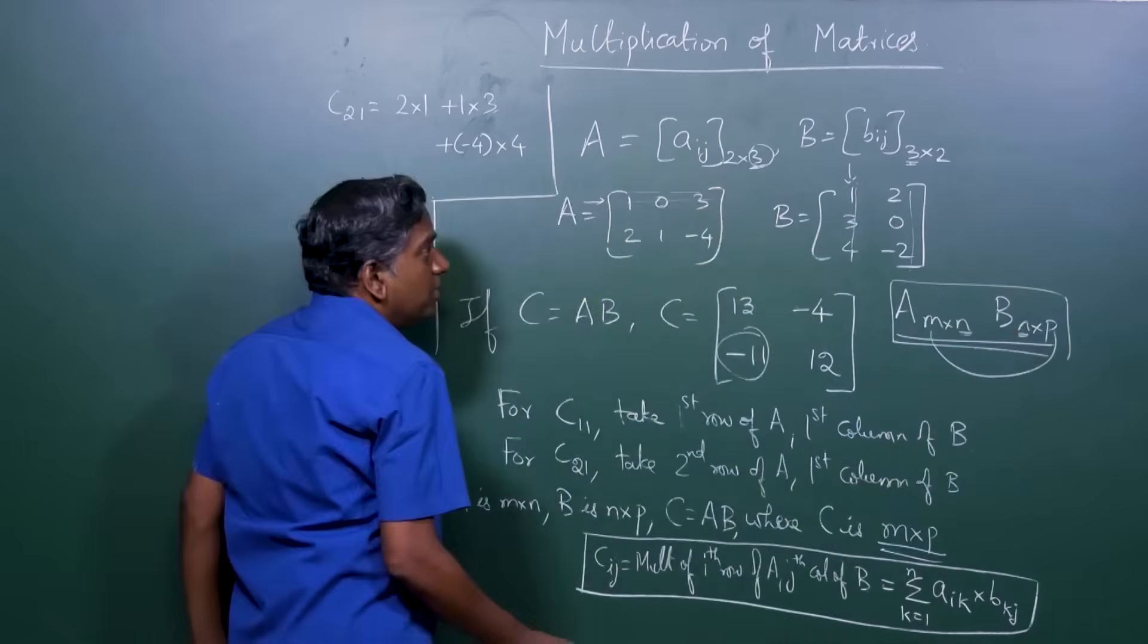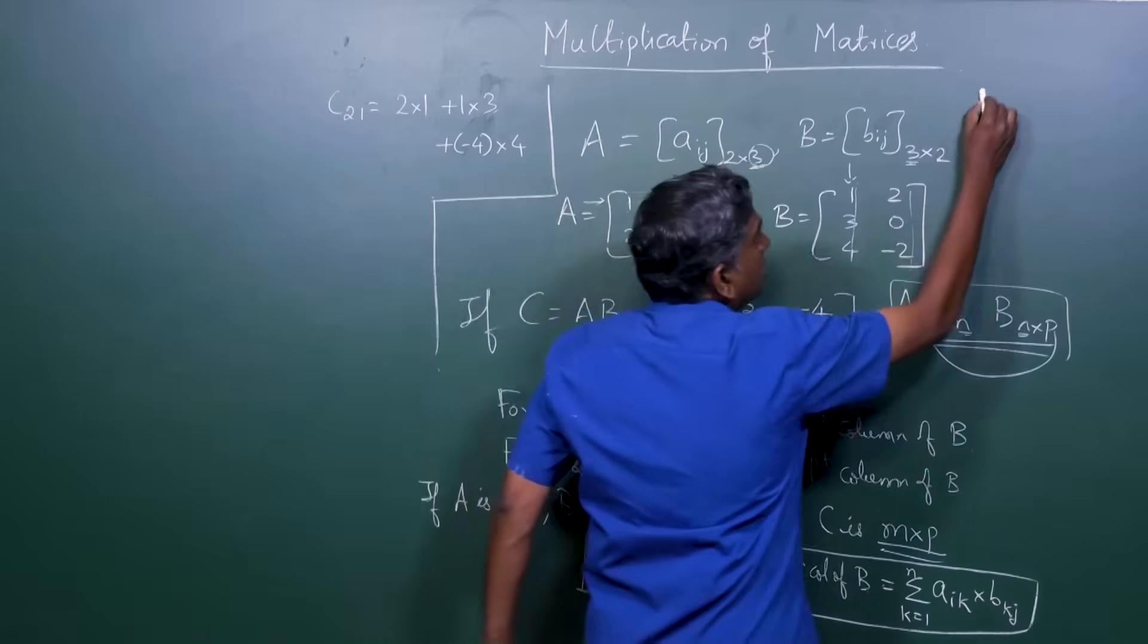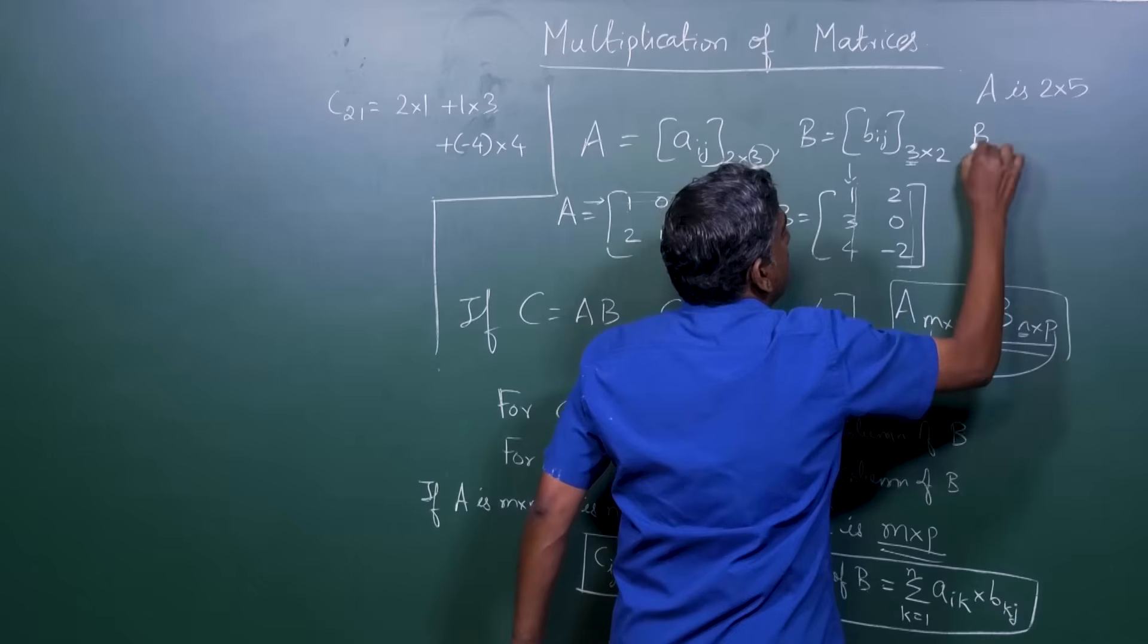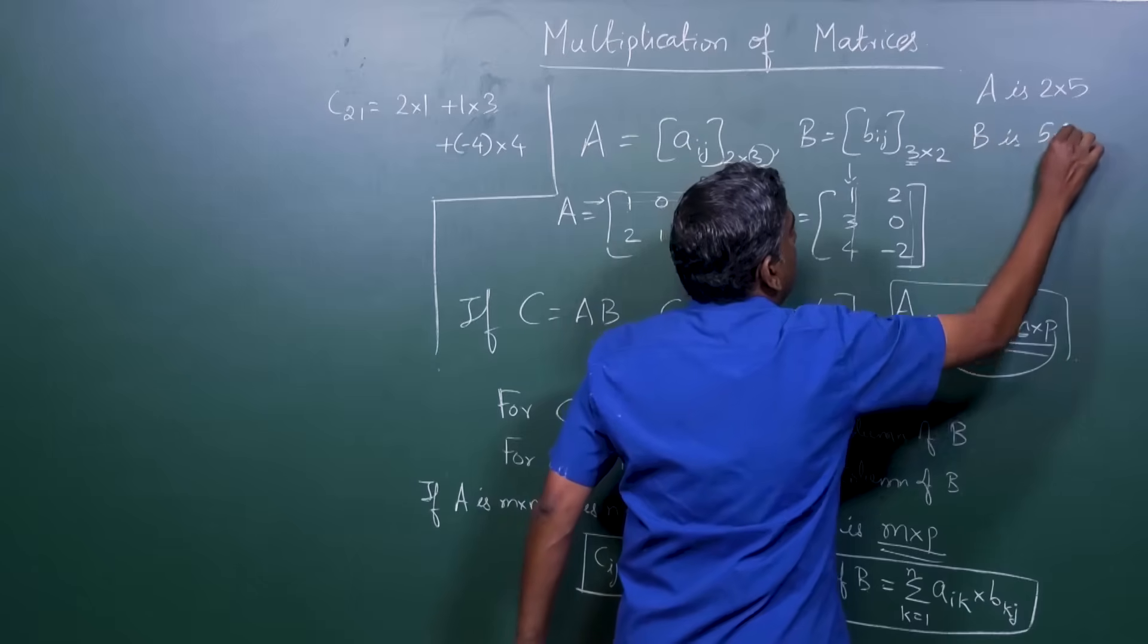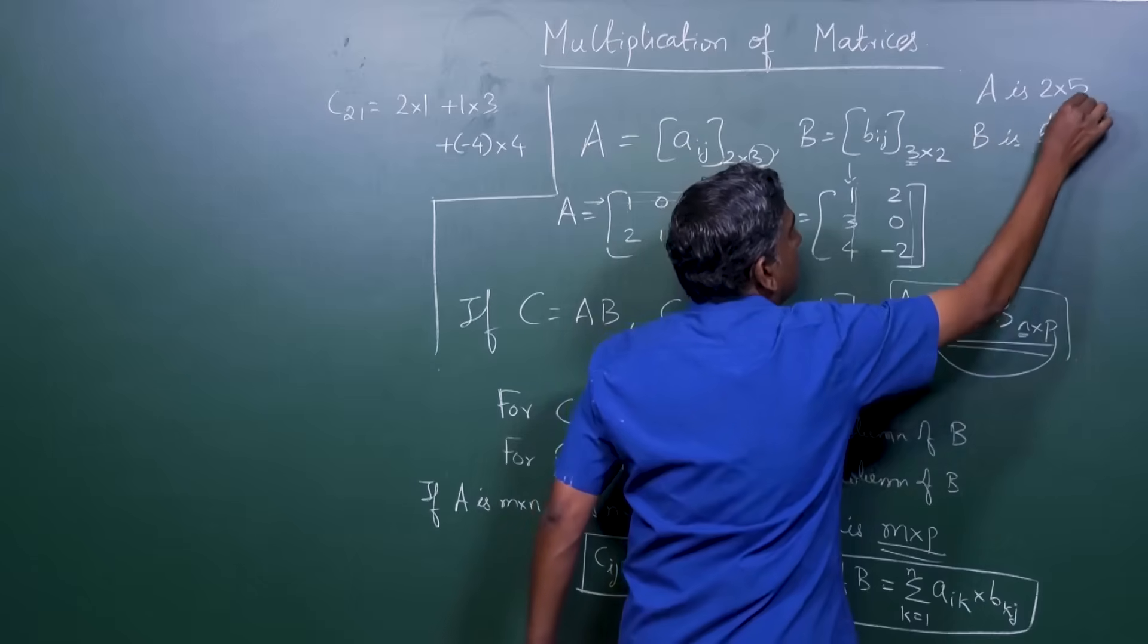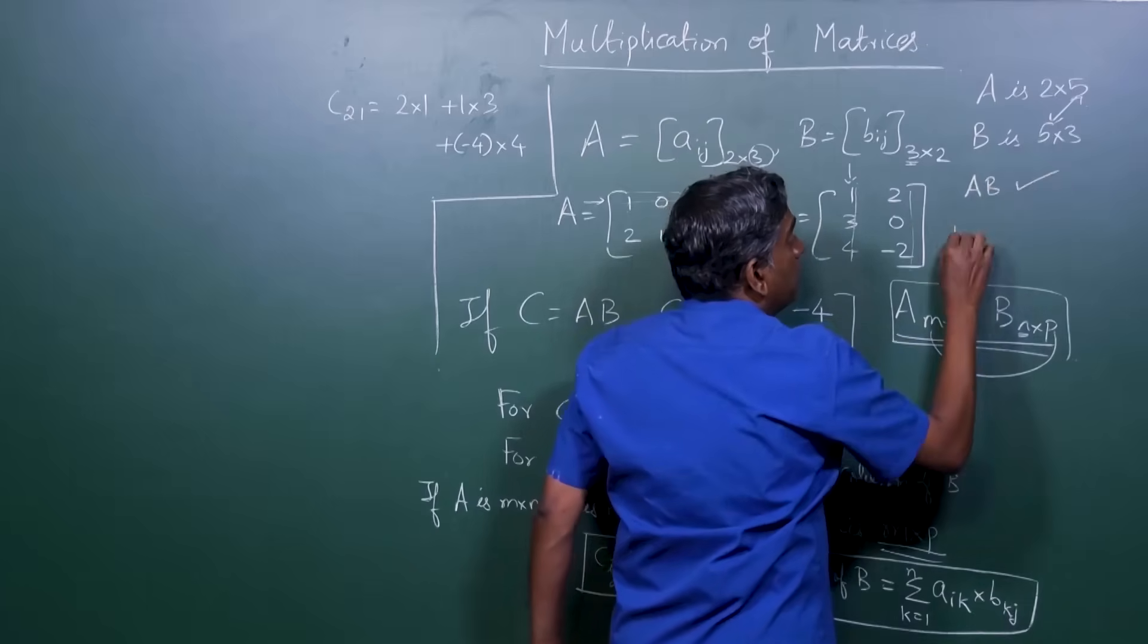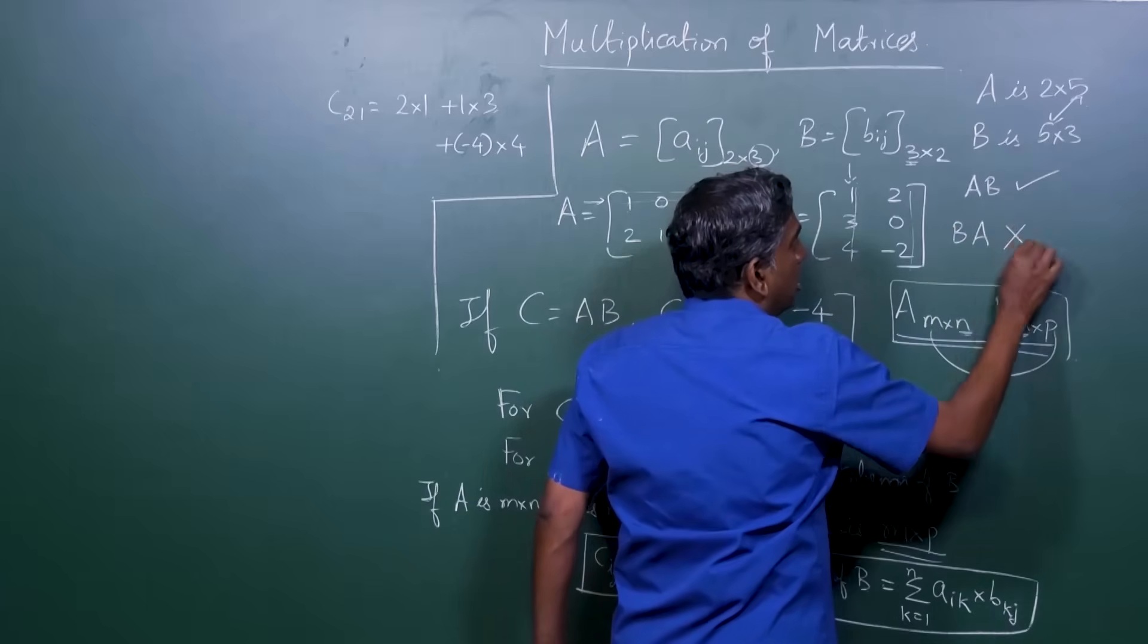And you can only multiply matrices where the first is m by n and the next is n by p. For example, you can multiply matrices if A is 2 by 5 and B is 5 by 3, you can multiply. AB is allowed,